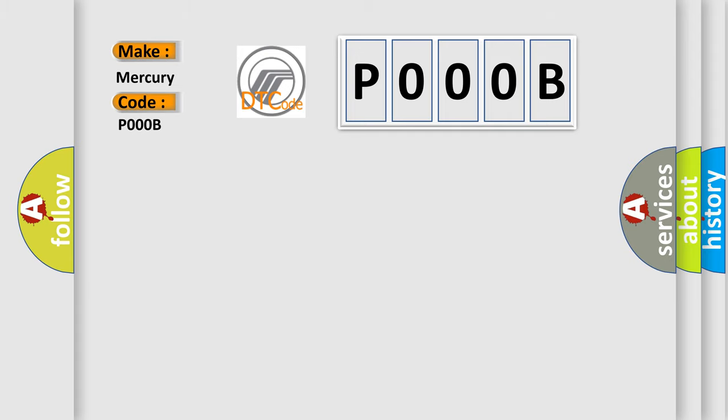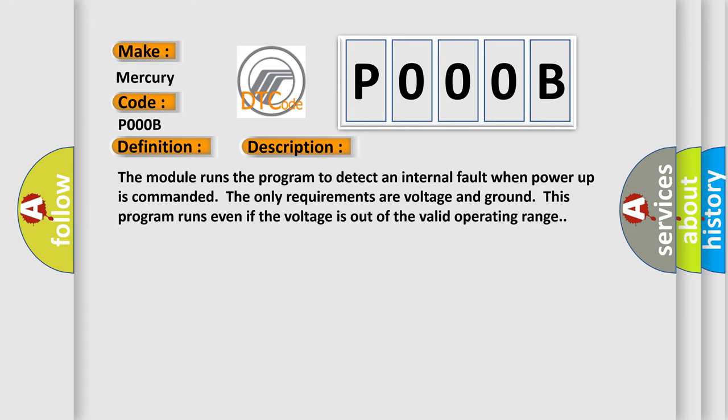The basic definition is Electronic Control Unit EEPROM incorrect programming. And now this is a short description of this DTC code. The module runs the program to detect an internal fault when power-up is commanded. The only requirements are voltage and ground. This program runs even if the voltage is out of the valid operating range.